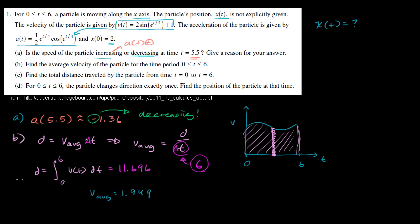Now let's do part c: find the total distance traveled by the particle from time t equals 0 to t equals 6. We actually figured that out as part of part b — it was 11.696. So we just write that down: 11.696.